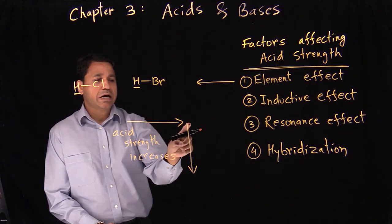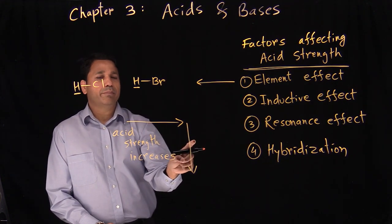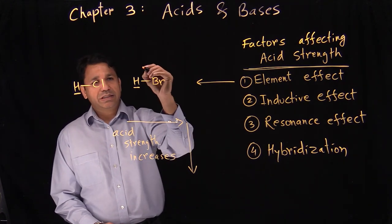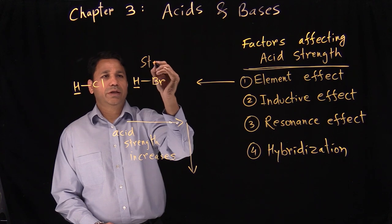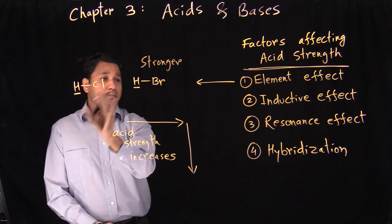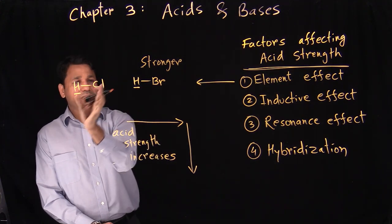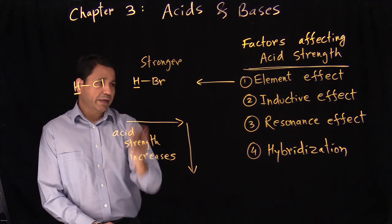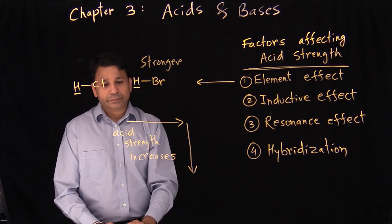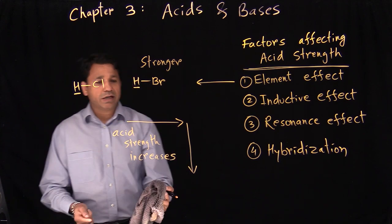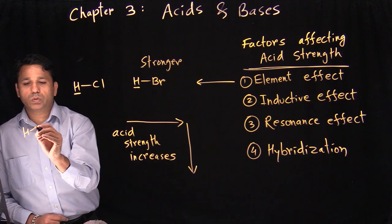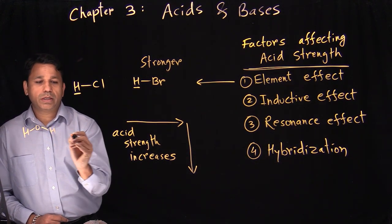Chlorine comes on top and bromine comes on the bottom in the periodic table, so HBr is the stronger acid. There is always going to be a comparison — you cannot just say HBr is a strong acid. So if you take another example, if you have H₂O and NH₃, which is the stronger acid?